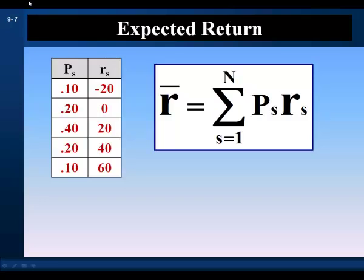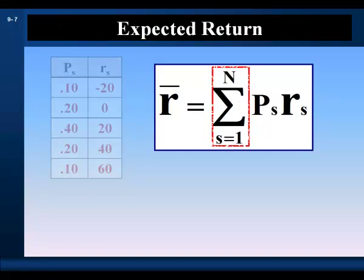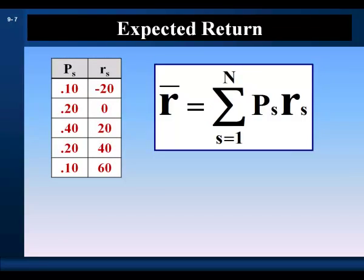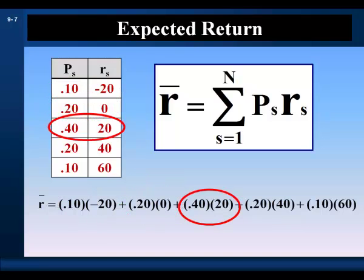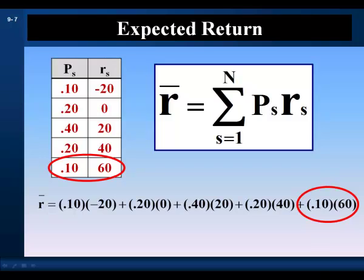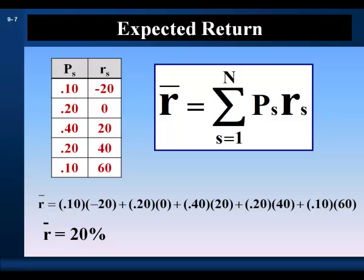The expected return is the best unbiased estimate of the return to be realized over a future period of time. We multiply the state-contingent return by the probability of its state, do that for all states, and sum across all states to get the expected return. So let's calculate the expected return of our probability distribution. We multiply the probability of the state and the state-contingent return for all states and sum across all states to get the expected return: 20%. That is our best unbiased estimate of the return we expect to earn over that future period of time.